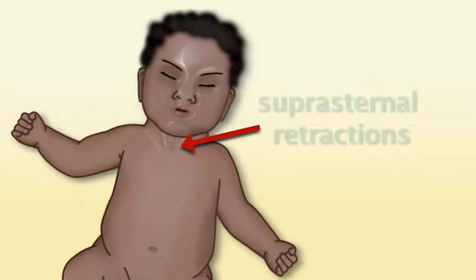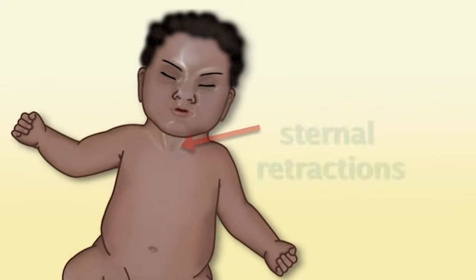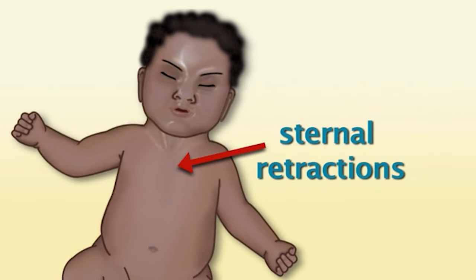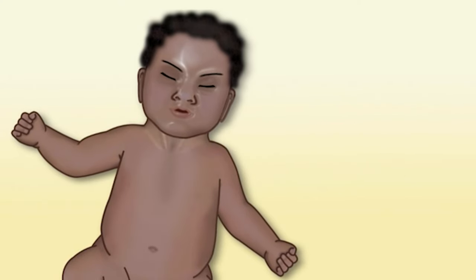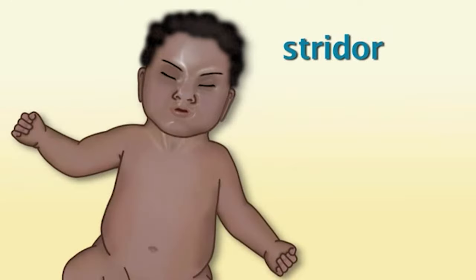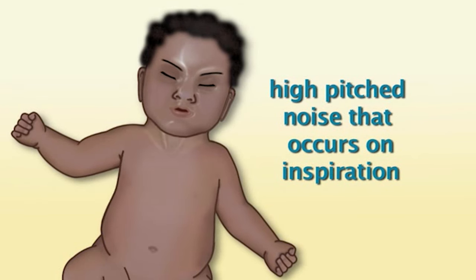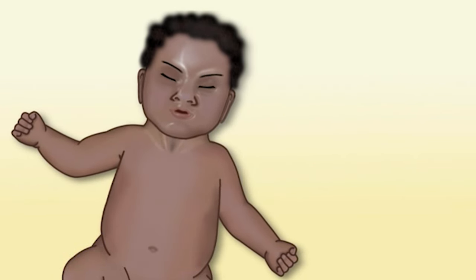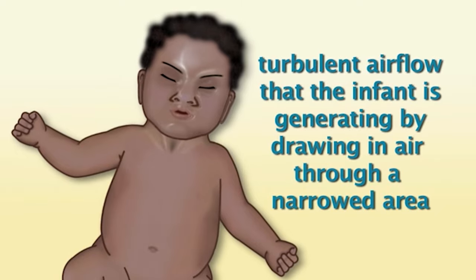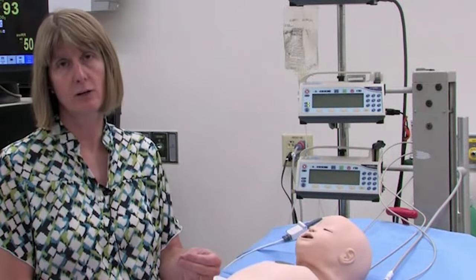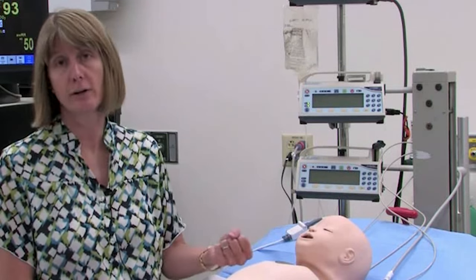When you have obstruction in the upper airway, you'll demonstrate increased work of breathing. With upper airway obstruction, you'll typically see suprasternal retractions, or potentially sternal retractions as well in a young infant with a compliant sternum. And there's a characteristic noise that may accompany this called stridor — a high-pitched noise that occurs on inspiration, essentially the sound of turbulent airflow generated by drawing air in through a narrowed area.